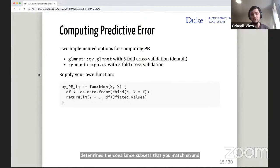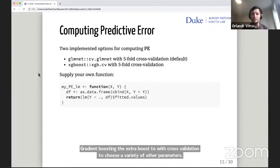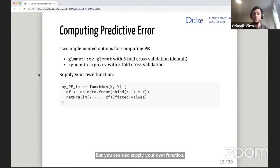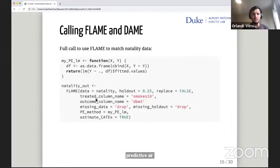Speaking of computing predictive error, this is a very important part of the algorithm because this determines your covariate importances, which determines the covariate subsets that you match on and ultimately affects the matches that you make. There's two implemented options for computing PE. Ridge regression via glmnet with cross-validation to choose the regularization parameter, and gradient boosting via XGBoost with cross-validation to choose a variety of other parameters. But you can also supply your own function if you think it's better suited to the data that you have at hand. There's details on how to write these in the docs. This is just a function that's going to use a linear model in order to compute predictive error.